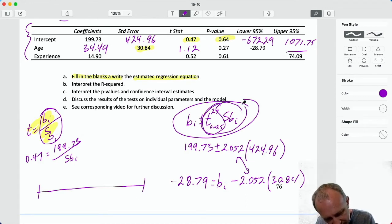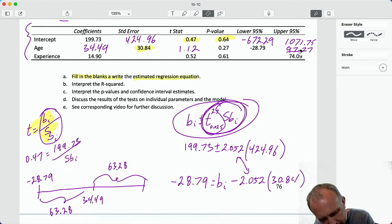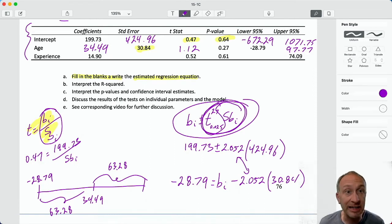I can get this upper limit. I have the magnitude of that margin of error now because that point estimate 34.49 minus that lower limit -28.79 gives me a margin of error of 63.28, which means this is also 63.28. And so that upper limit is 97.77. And once again, I have an interval that crosses zero, consistent with a large p-value. Everything's working out.